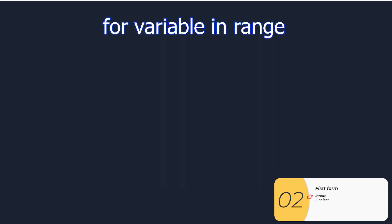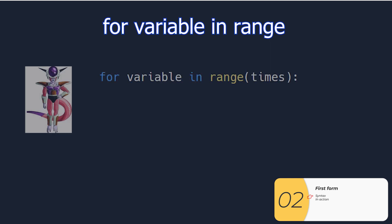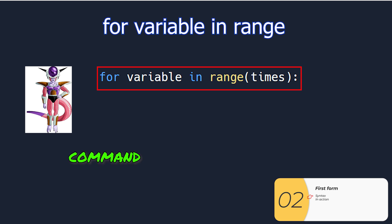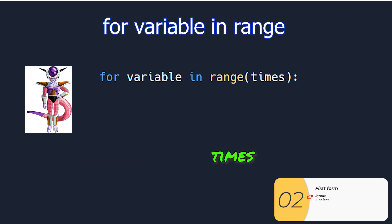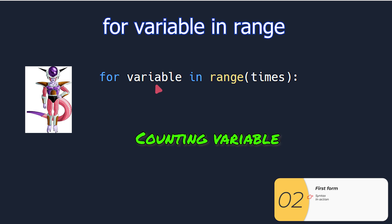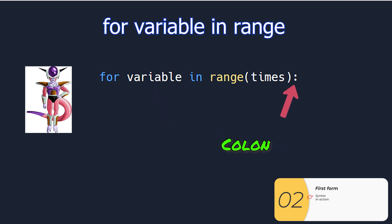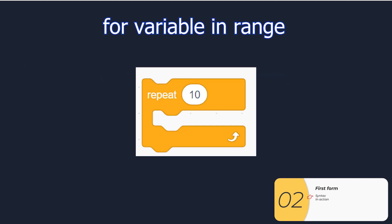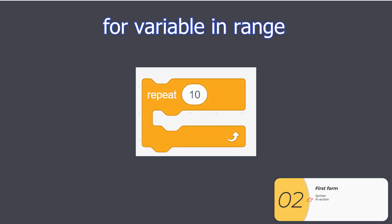The command I'm going to use to repeat a certain number of times is: for variable in range. This comes in a lot of forms; this is its first form. The number inside range is how many times I want to repeat. Variable is a counting variable I can use to keep track of what number I'm on. And don't forget the colon that you need for all for loops. If you know Scratch, it's just like the repeat block.